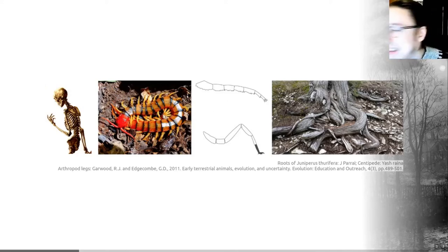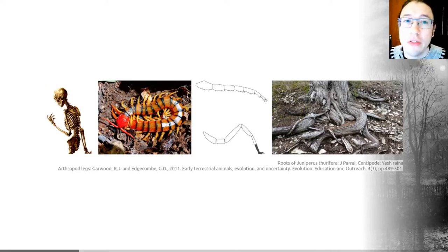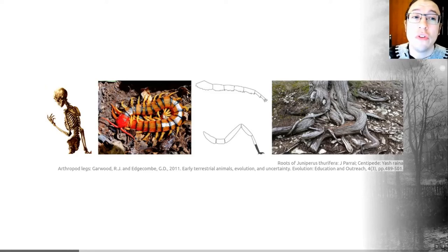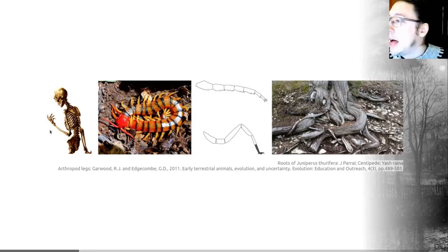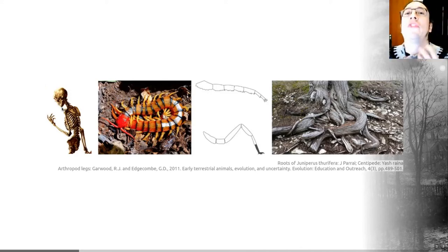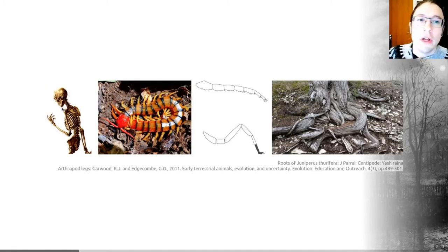Arthropods, such as this centipede, have their cuticle — their exoskeleton — which provides support. This is something they evolved when still living in the ocean, so it is actually an exaptation to life on land rather than an adaptation that occurred once they got onto land. In vertebrates, such as humans, these organisms have evolved a skeleton to provide support, among its many other multifunctional roles.